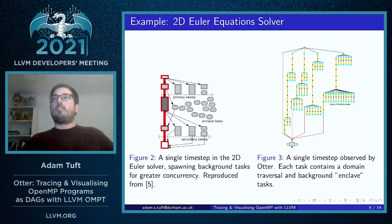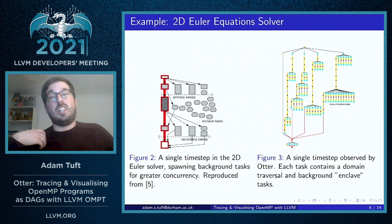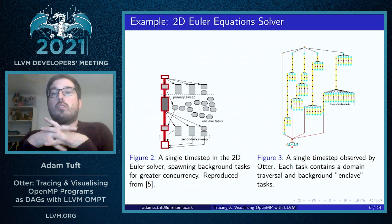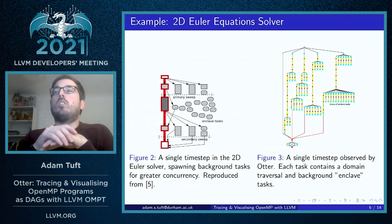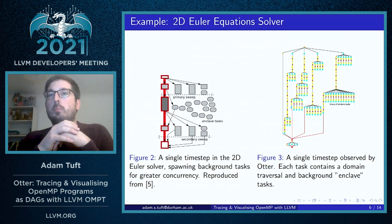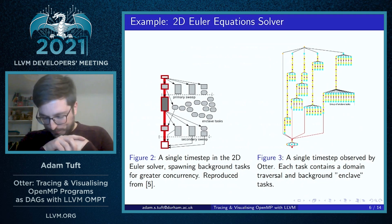We have used Otter to highlight some inefficiencies in the LLVM OpenMP implementation as well. The image on the left here is taken from a paper studying the performance of a 2D Euler equations solver built with the Exahype PDE engine.